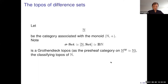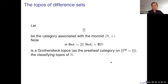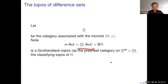Out of these categories, the most important and interesting one is the category of difference sets, because it turns out to be a topos. If you denote by underline-n the category associated with the additive monoid of natural numbers, then difference sets are nothing other than actions for the additive monoid N. You can also view them as presheaves on underline-n-op, and therefore it becomes a Grothendieck topos. People usually refer to this object as the classifying topos of the monoid N.